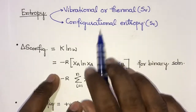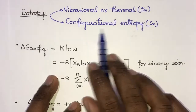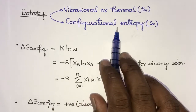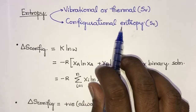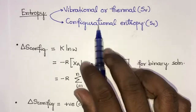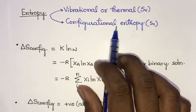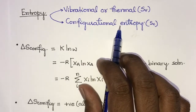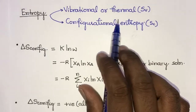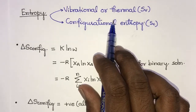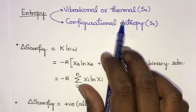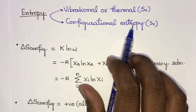Configurational entropy can be considered in terms of the number of ways in which atoms themselves can be distributed in space. It comes into picture when we take more than one type of atom and try to put them together in one place.